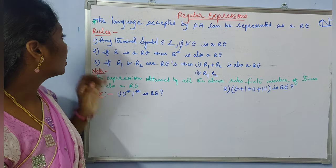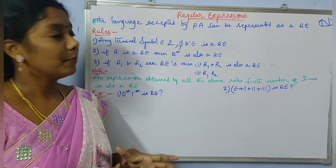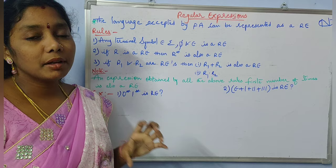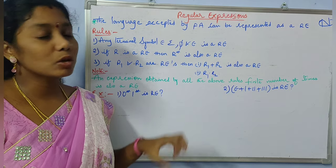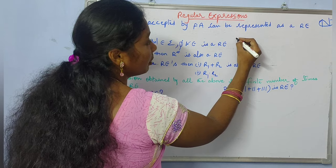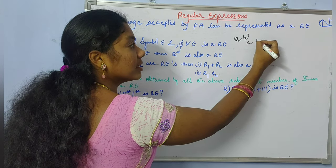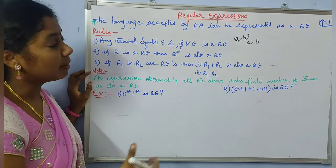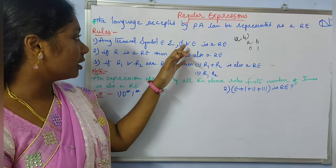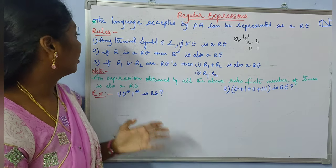Coming to the first rule: any terminal symbol belongs to sigma, and phi and epsilon is a regular expression. So, any input symbol which belongs to sigma is a regular expression, phi is a regular expression, and epsilon is also a regular expression. For example, if sigma is formed by the input symbols {a, b}, then I can say that a is a regular expression and b is a regular expression. Epsilon is also a regular expression.